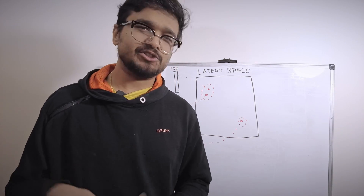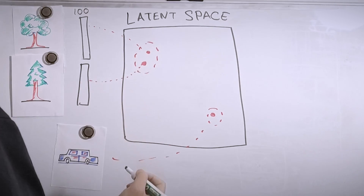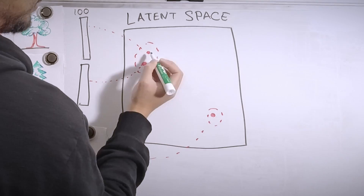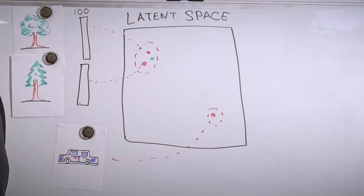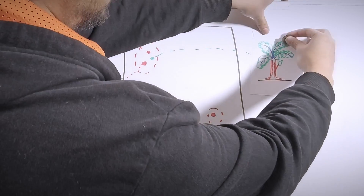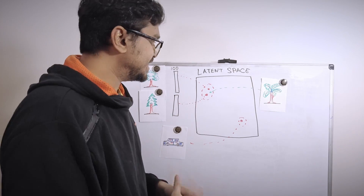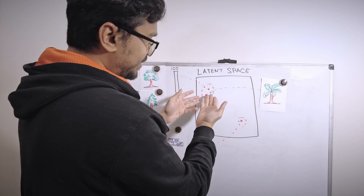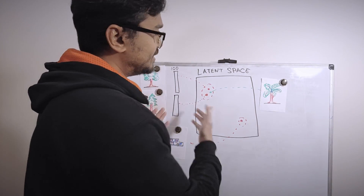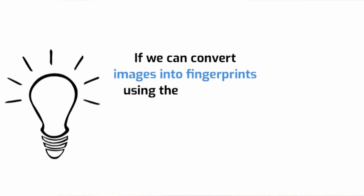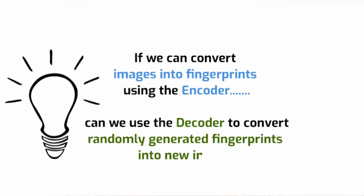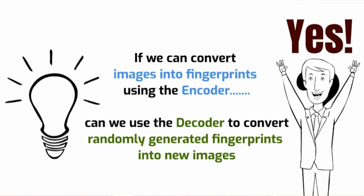If we can randomly sample a point and decode it into a new image, we effectively have a generative model. If we can convert images into fingerprints using the encoder, can we also use the decoder to convert randomly generated fingerprints into new images? Turns out, yes. Techniques like the variational autoencoder do exactly that — training autoencoders so that later we can generate images by passing in randomly generated latent embeddings.